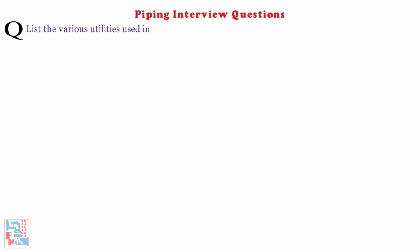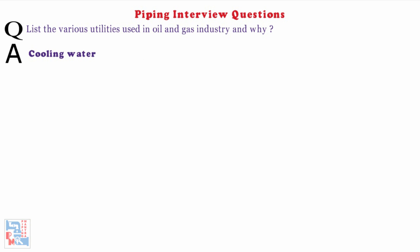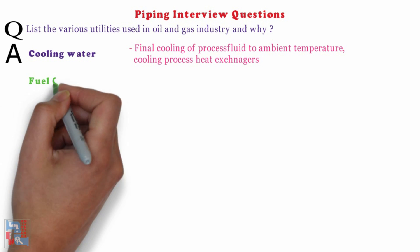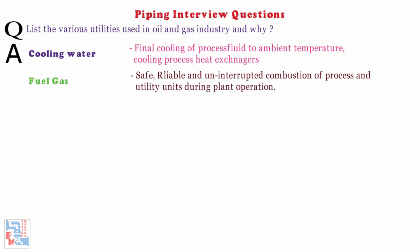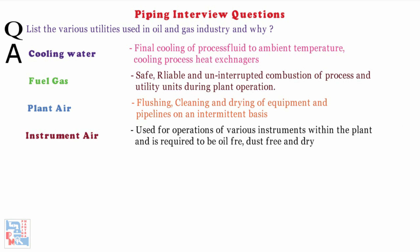List the various utilities used in the oil and gas industry. First, cooling water systems — used for final cooling of process fluids to ambient temperatures and cooling of process heat exchangers. Second, fuel gas systems — for safe, reliable, and uninterrupted combustion of process and utility units during plant operation. Next, plant air — for flushing, cleaning, and drying of equipment and pipelines on an intermittent basis. Next, instrument air — used for operation of various instruments within the plant, and is required to be oil-free, dust-free, and dry.